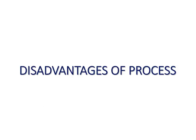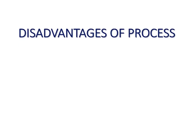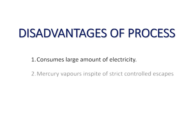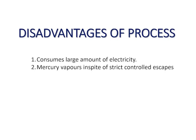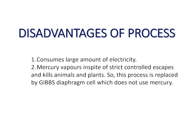Disadvantages of the process: It consumes a large amount of electricity. Mercury vapours, in spite of strict controls, escape and kill animals and plants. Therefore, this process is being replaced by the Gibbs diaphragm cell, which does not use mercury.